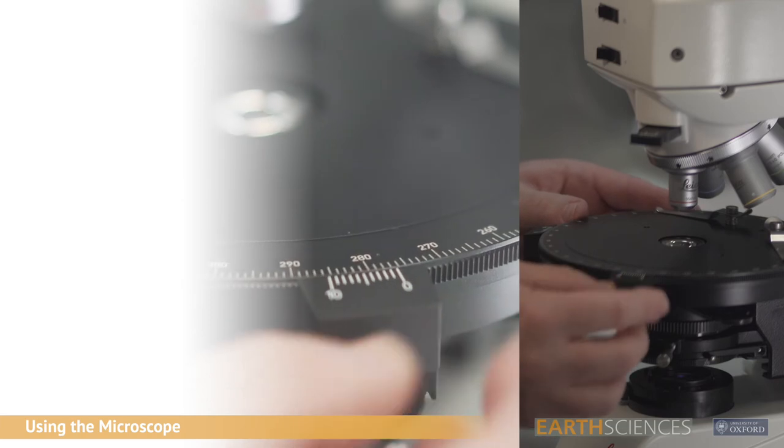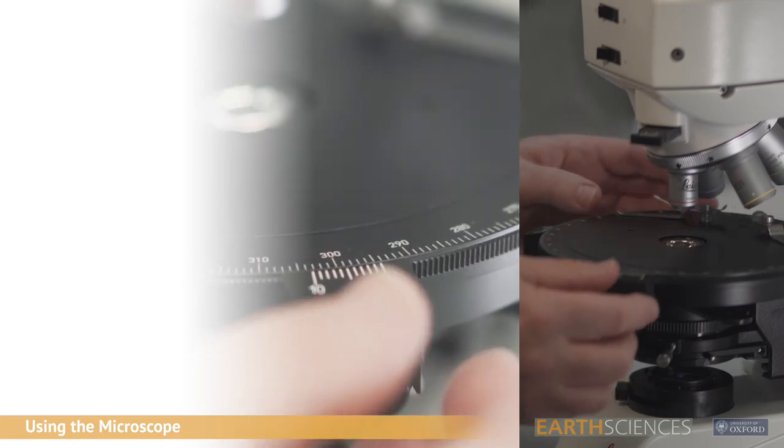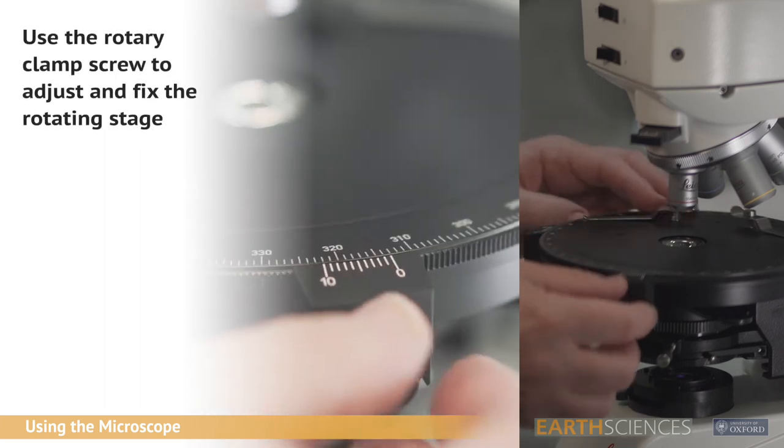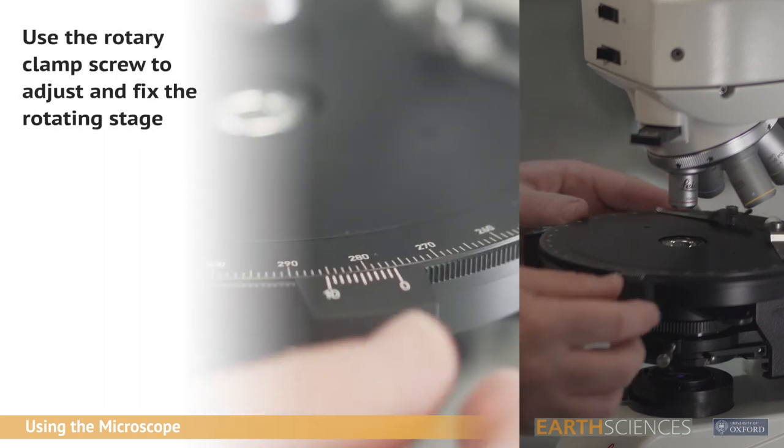The circular rotating stage is marked in one degree increments and has two verniers allowing one-tenth degree measurements. To the right hand vernier block is a rotary clamp screw to fix the stage in position.